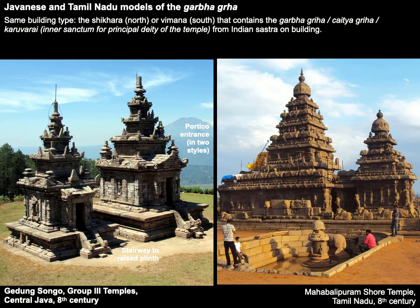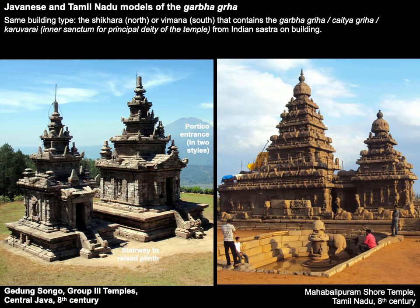Going back to architecture, let's compare some Hindu architecture found in this part of the world versus that of India to see where they converge and differ. On screen are the Javanese and Tamil Nadu models for the Garbhagriha — the same type of building. In the north it's called the Shikara and in the south the Vimana. They contain the inner sanctum for housing the principal deity and are based on the Indian sastra on building.